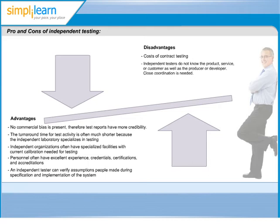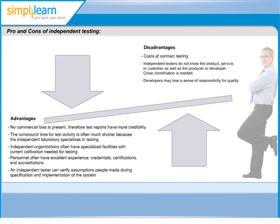This is because they have not been involved in the development of the product. Since independent organisations might not have a communication channel with the development team, they will not be able to discuss and clarify product items. This can often lead to communication gaps between the teams and ultimately impacts end software quality. As another organisation is testing the software and they are responsible for the quality, the developer may lose the sense of responsibility towards quality.